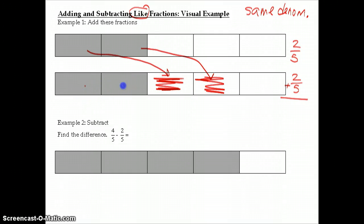We have a total of one, two, three, four-fifths. So four-fifths is our answer. So this is a visual of what we're doing when we're adding fractions that have the same denominator.